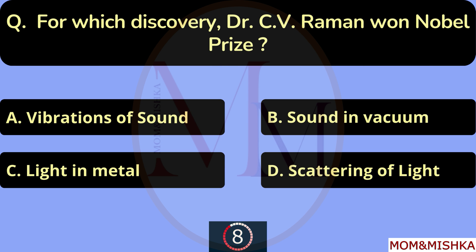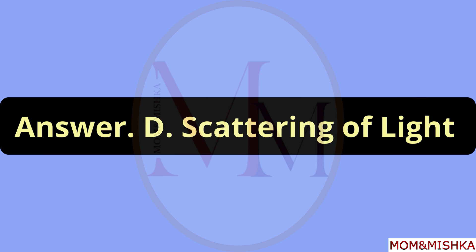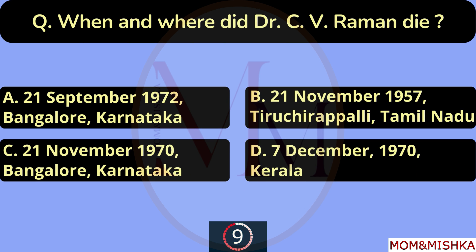For which discovery did Dr. C.V. Raman win the Nobel Prize? For scattering of light. Option D. When and where did Dr. C.V. Raman die?